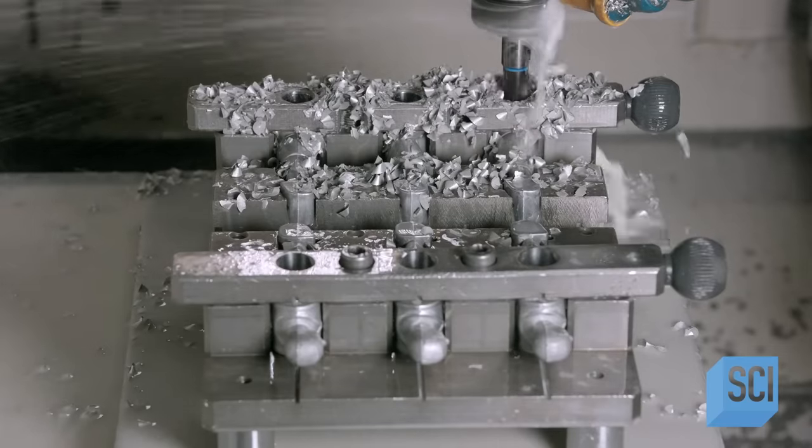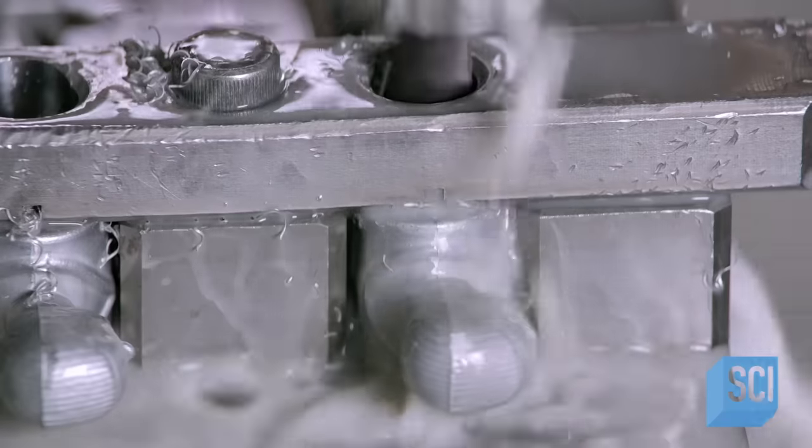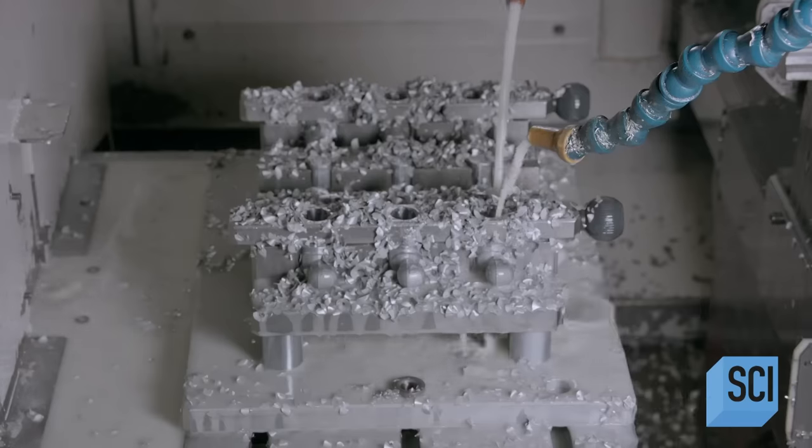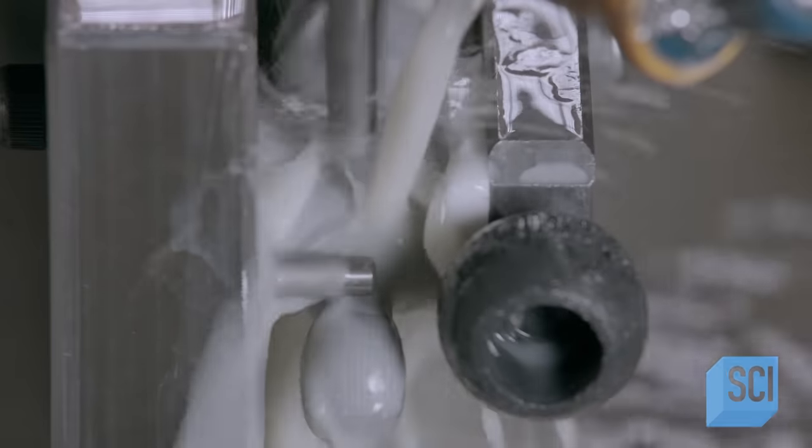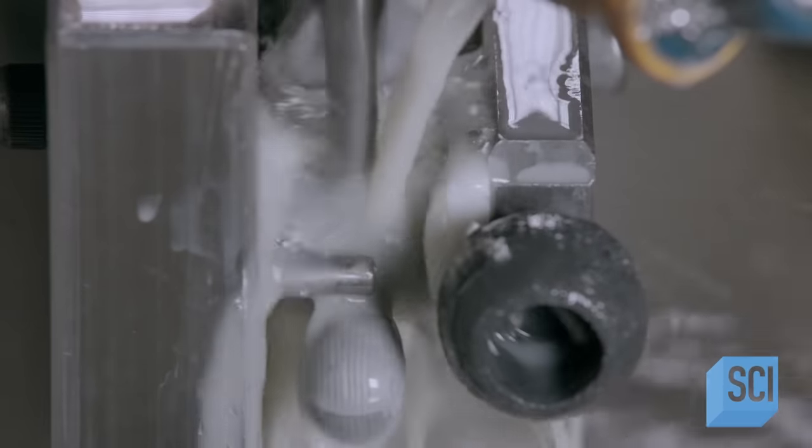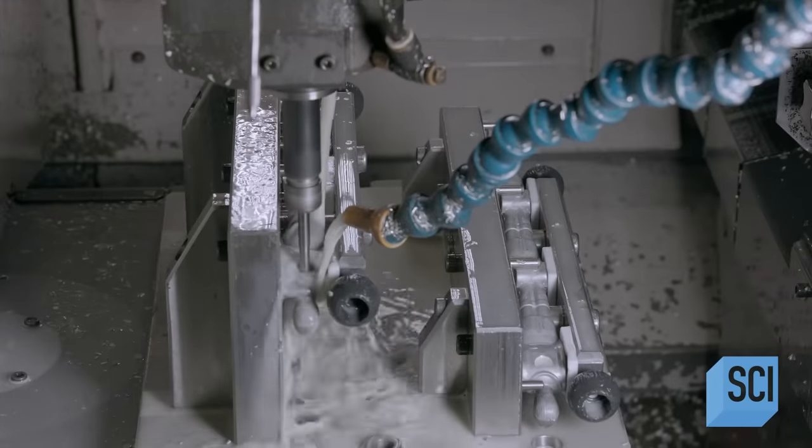A computer-guided machine drills a hole in the center of each player through which the rod will pass. Then, the machine threads a hole through the player's back, for the screw that secures the player to the rod.